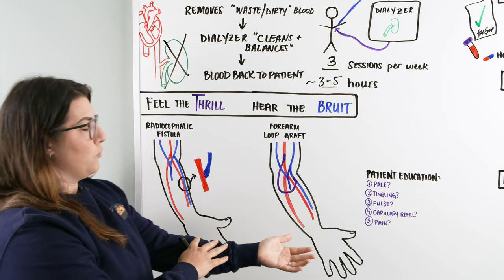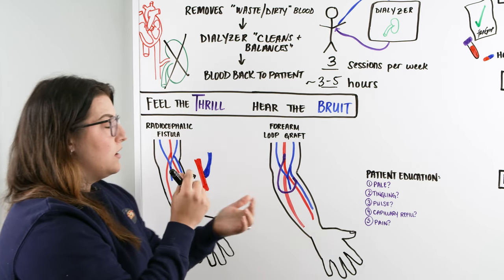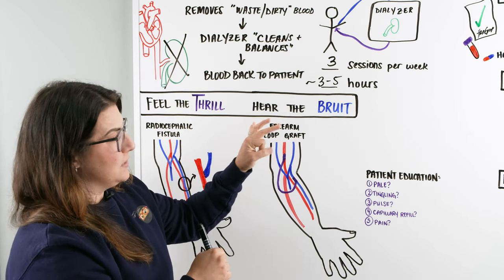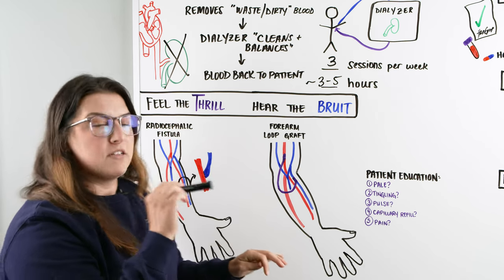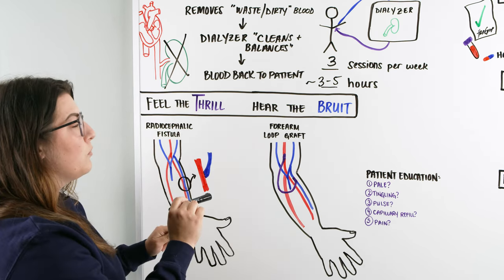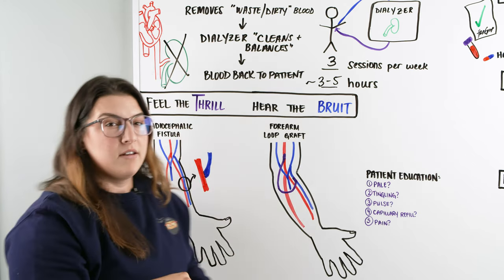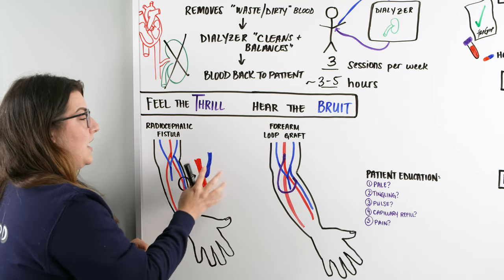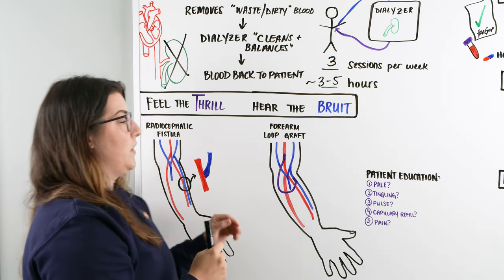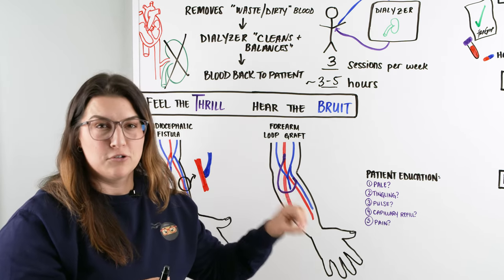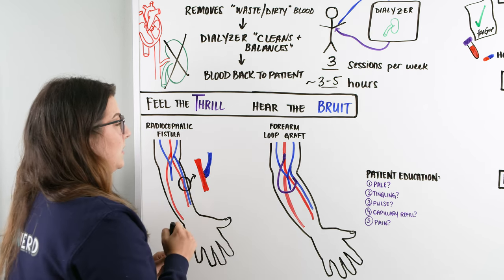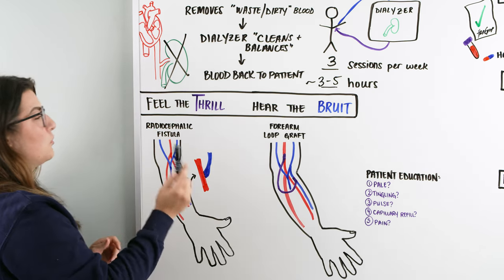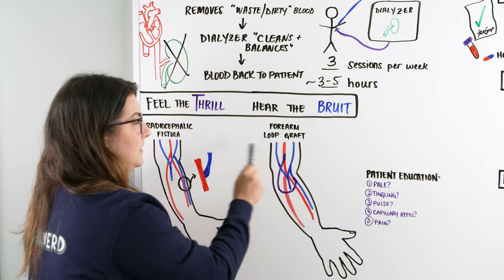Fistulas and grafts are typically in the lower forearm and are used for dialysis. If we were to just use two IVs, the small diameter means a slower flow rate, meaning we can't clean or balance blood fast enough in three to four hours. Fistulas and grafts allow larger-diameter needles, enabling blood to be pulled through quickly and much more blood to be cleaned.